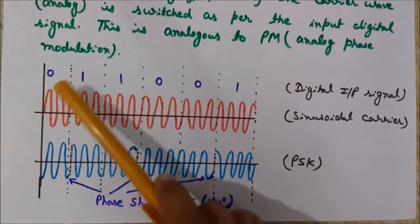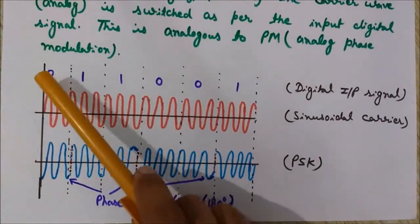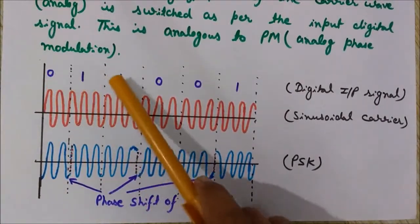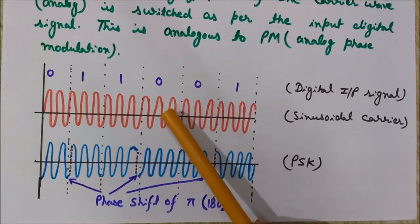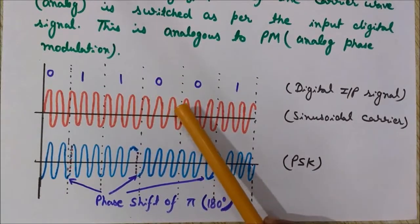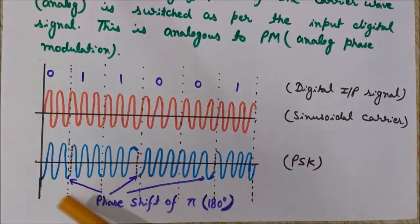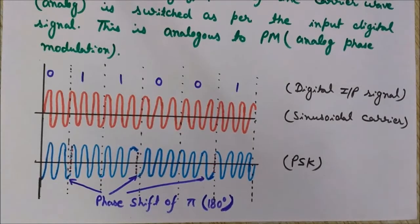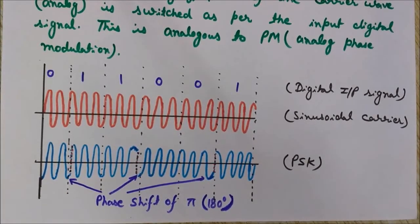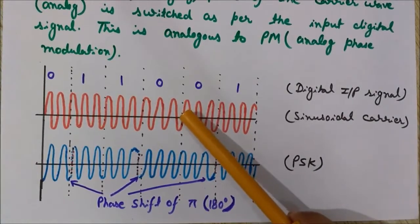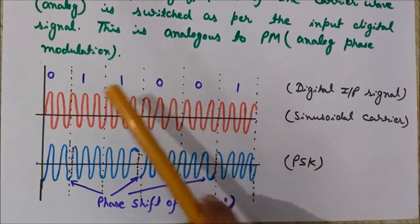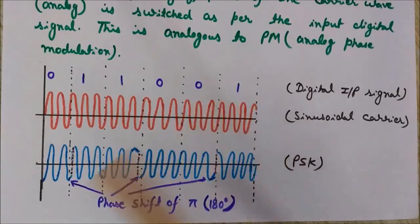Let's understand the concept with the help of this waveform. Here we have the digital input signal: zero, one, one, zero, zero, one — and this is the carrier wave, analog in nature. Now we want to perform phase shift keying, so we will vary the phase of this carrier wave according to this digital input signal.